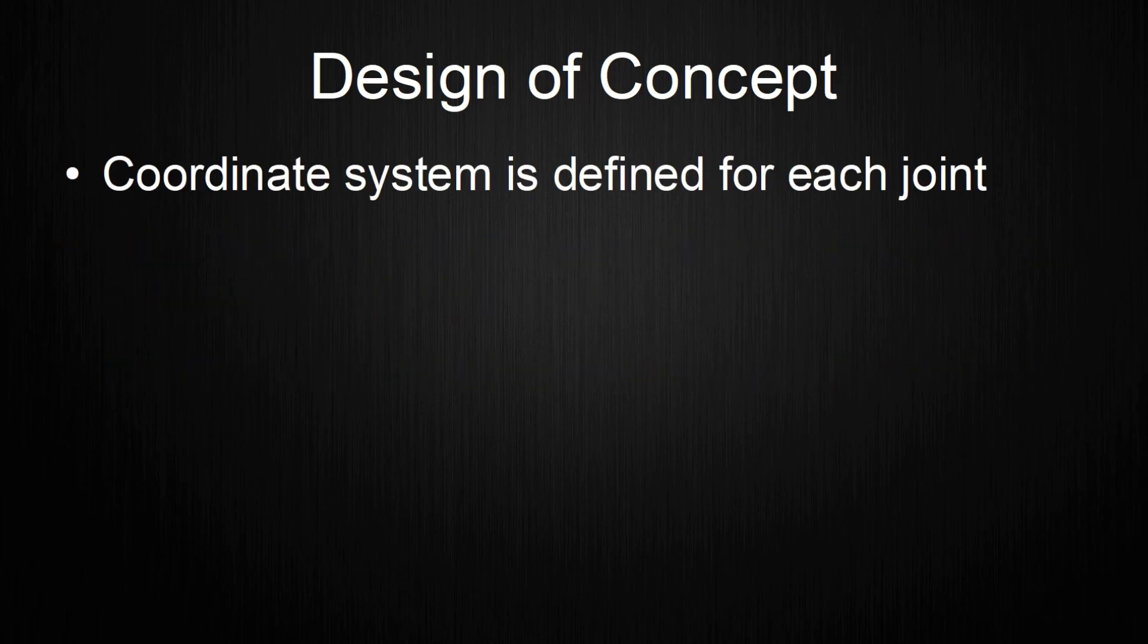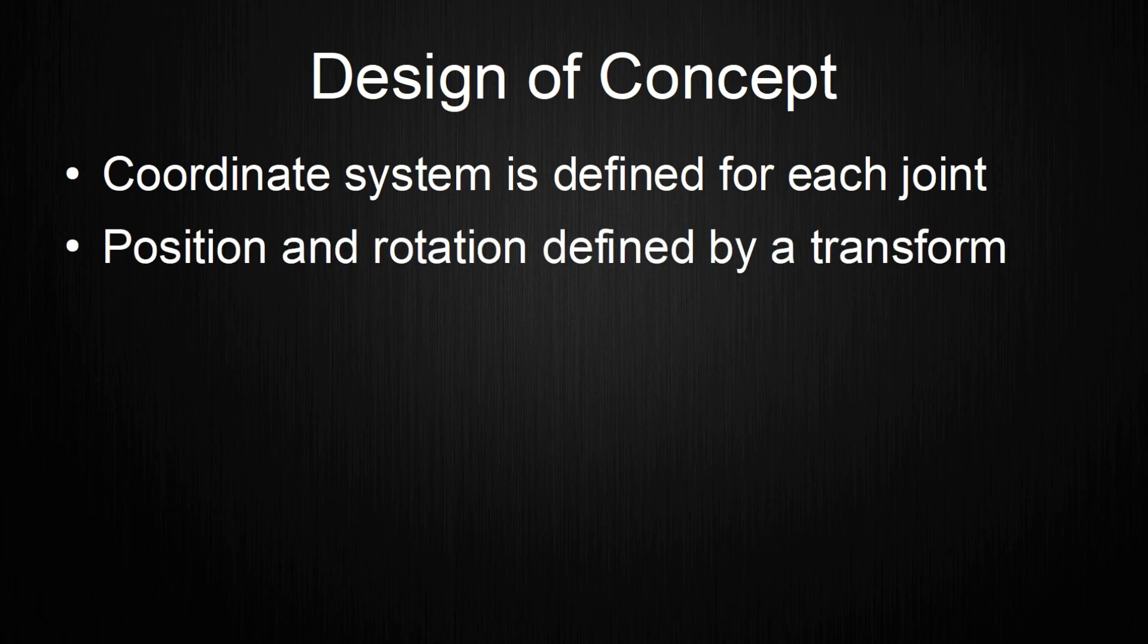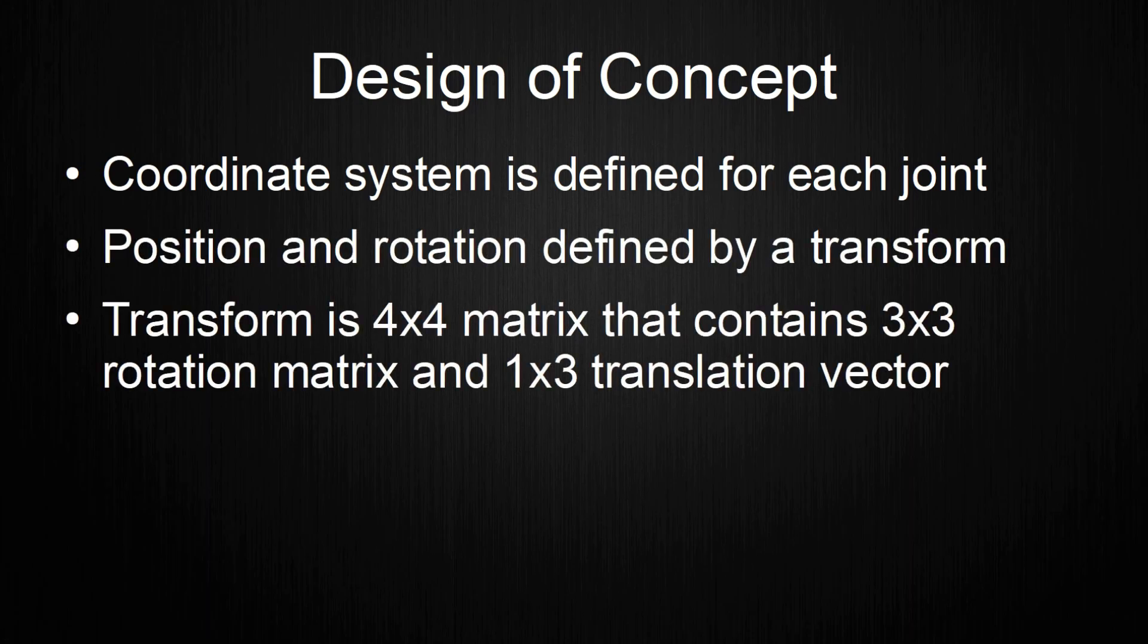In robotics, a coordinate system is defined for each joint in a robot. The positions and rotation of a coordinate system is defined with a transform. This transform is a 4x4 matrix that contains a rotation matrix and a translation vector. The rotation matrix is a 3x3 matrix and describes in which direction the new axis is in relation to the previous coordinate system. The translation vector defines by which distance along the old coordinate axes the center position needs to be moved.